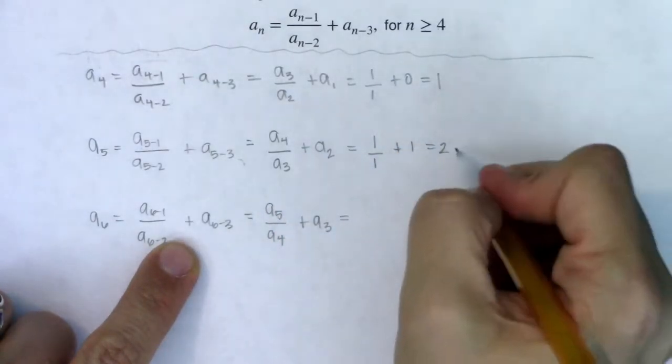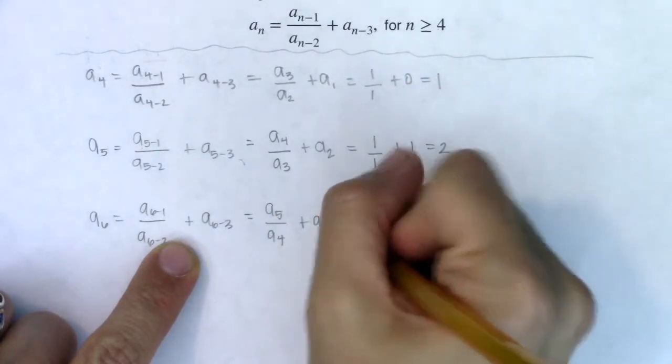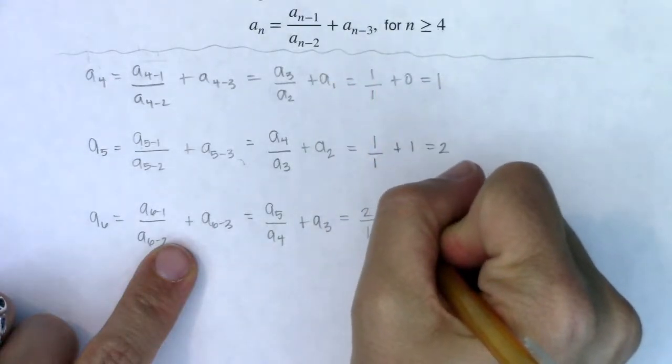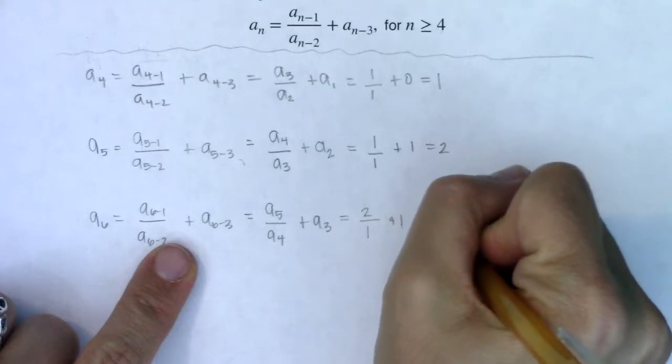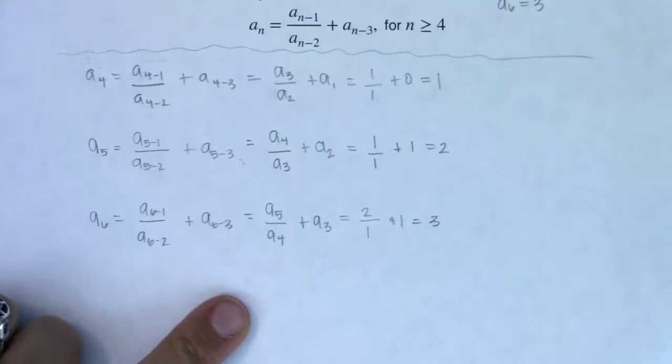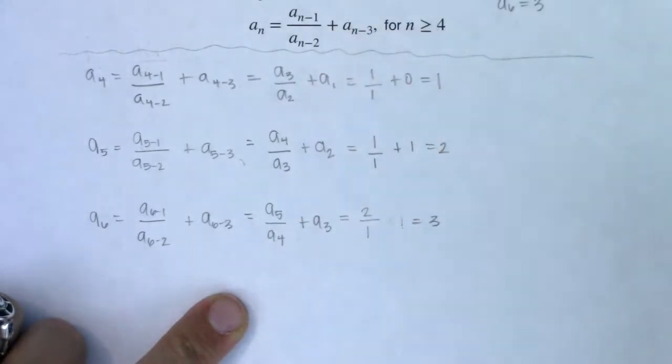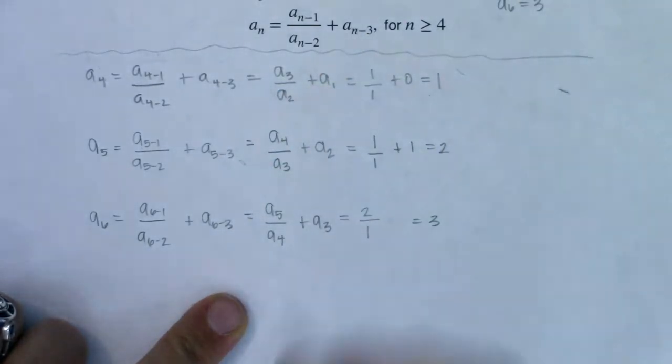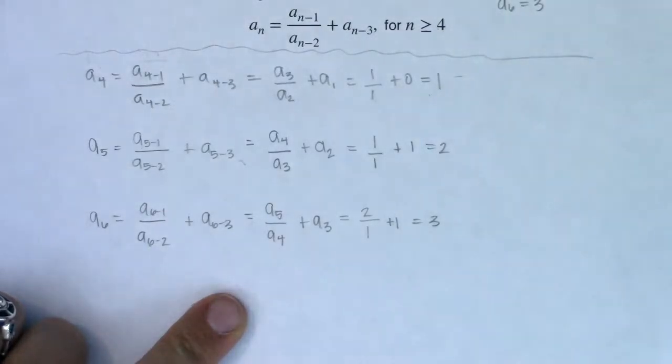The subscripts become a sub five over a sub four plus a sub three. A sub five was two. A sub four was one. And a sub three, even though it's out of sight, it was up here, it was defined to be one. So two over one plus one is three. So at this point, I know a sub six is equal to three. Let me just erase this a bit. It looks like a pretty silly plus sign.